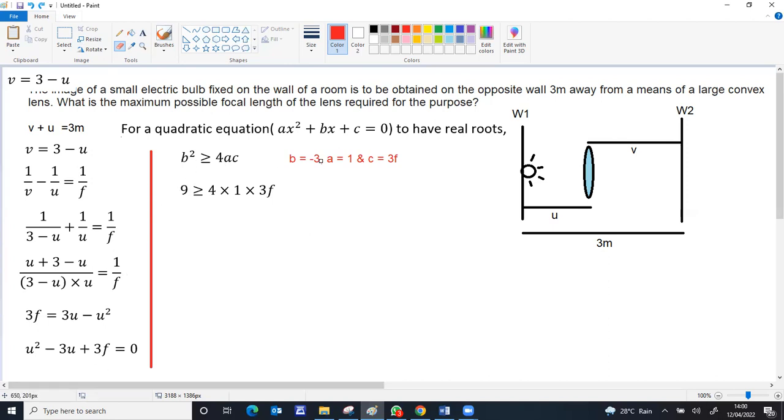So b² means (-3)² = 9, and 9 ≥ 4 × 1 × 3f. Simplifying: 9 ≥ 12f, so 3/4 meters ≥ f. 3/4 meters is 0.75 meters. Rearranging, f ≤ 0.75 meters, so the maximum value of f is 0.75 meters.